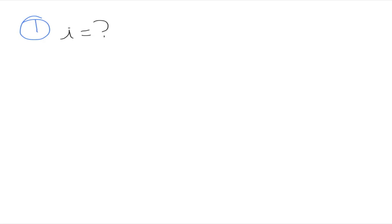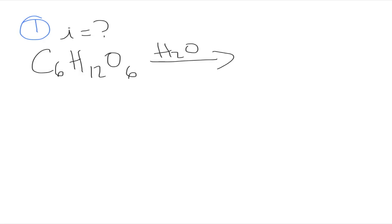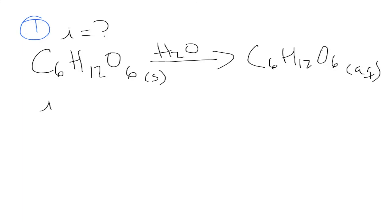The first thing we want to do is find the van 't Hoff factor, which relates to the ionization of solutes. Our solute C6H12O6 is a molecular compound, so when put into water it is not going to ionize — it stays the same, just as an aqueous species. This gives us a van 't Hoff factor equal to 1, so we can effectively discard it from our equations since it won't influence the result.